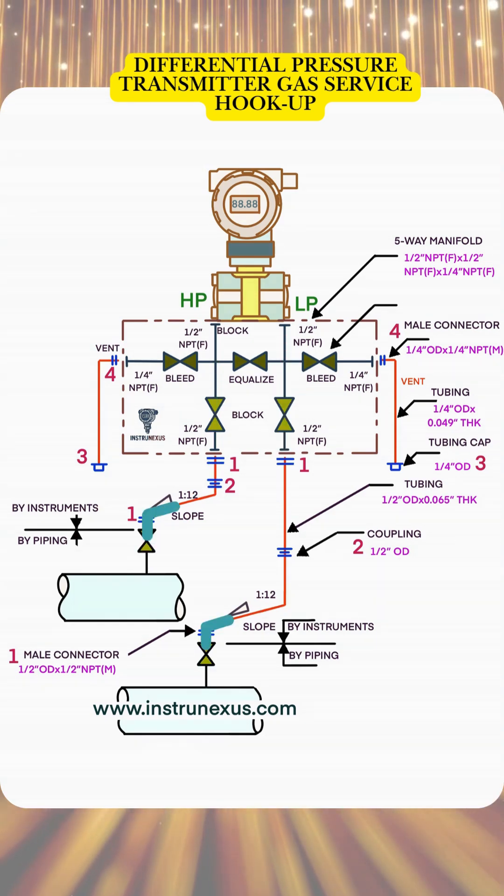During maintenance, simply close both block valves, open the equalizing valve, and bleed pressure safely through the vent. This hookup ensures accurate measurement,